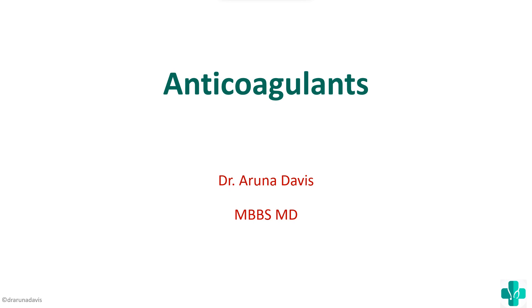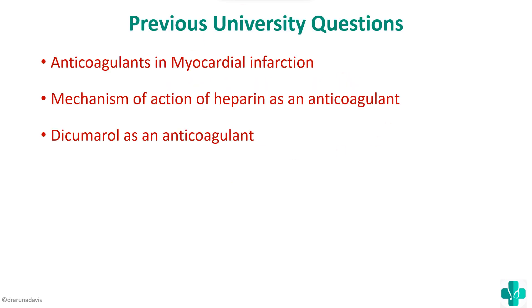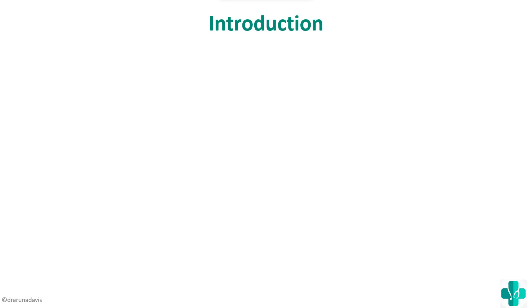In this video we are going to quickly see some important exam-oriented points regarding anticoagulants. This has been asked previously in university exams, such as: explain the anticoagulants, physiological basis of using anticoagulants in myocardial infarction, mechanism of action of heparin as an anticoagulant, and mechanism of action of dicumarol as an anticoagulant. When a short essay question is asked, we need an introduction, so we can start with the basic classification of anticoagulants.